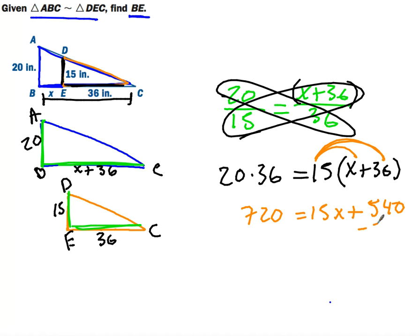Subtract 540 from both sides. Okay, these cancel out. We end up getting 180 equals 15X, divide by 15, divide by 15.